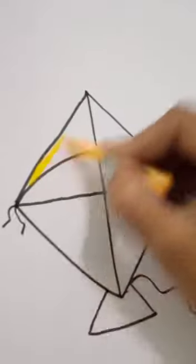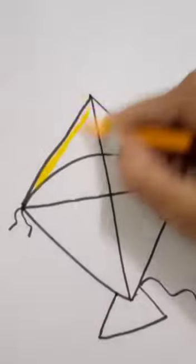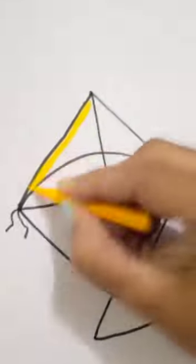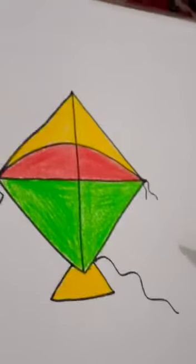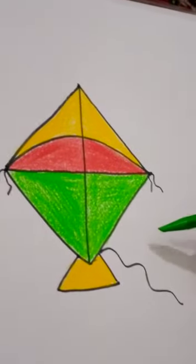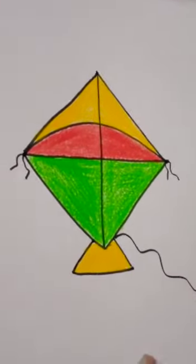So, start the coloring from its sides. Hum iski side se color karna start karenge. Do the dark dark coloring. So, my dear students. Like this also we can draw kite.